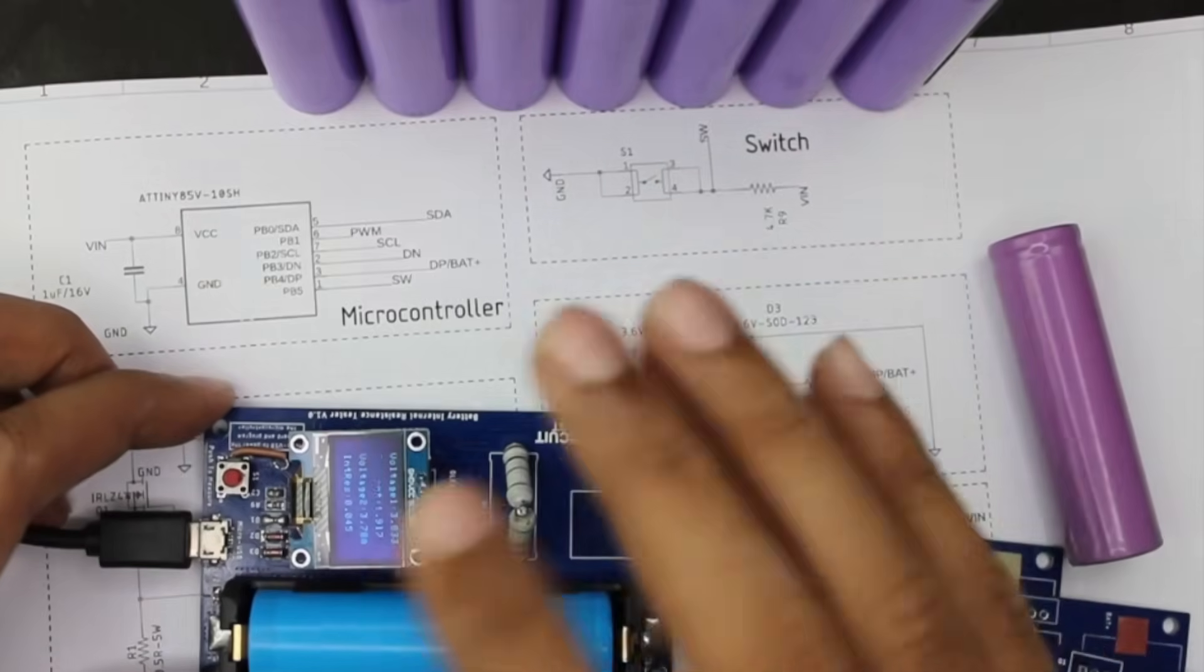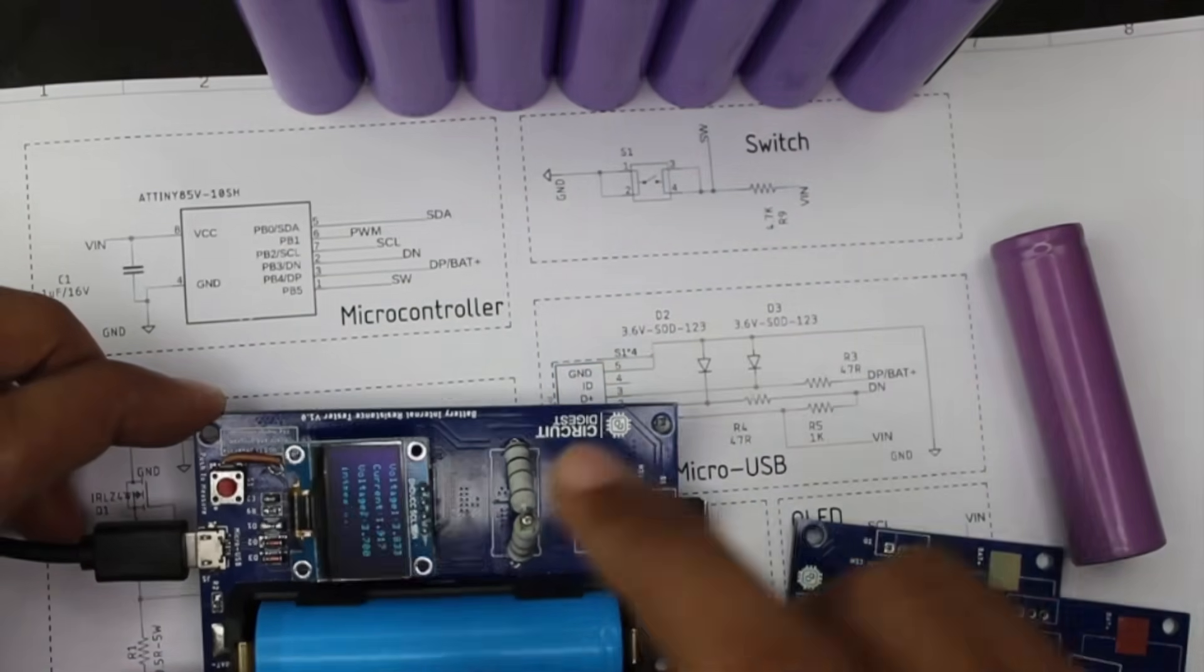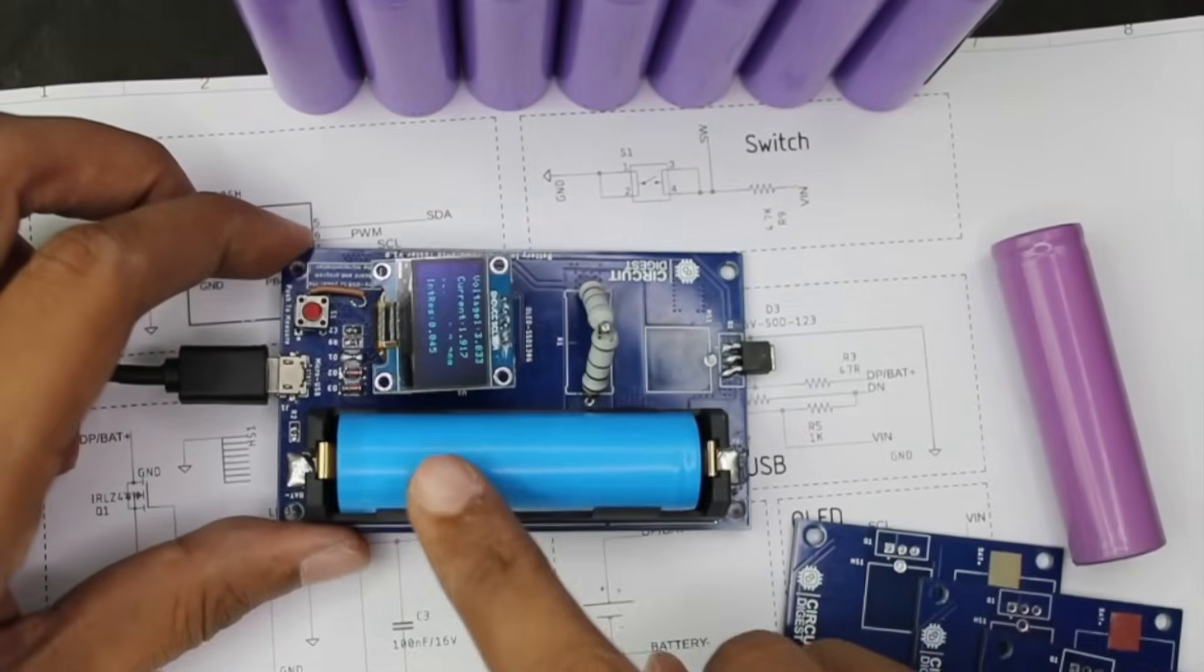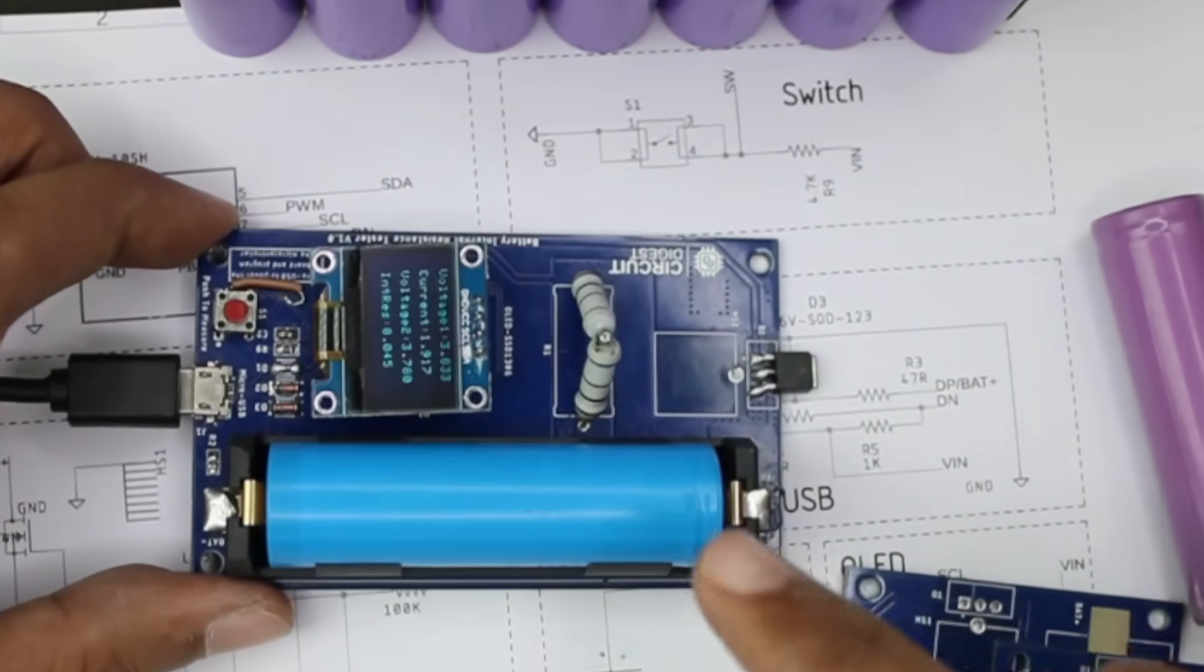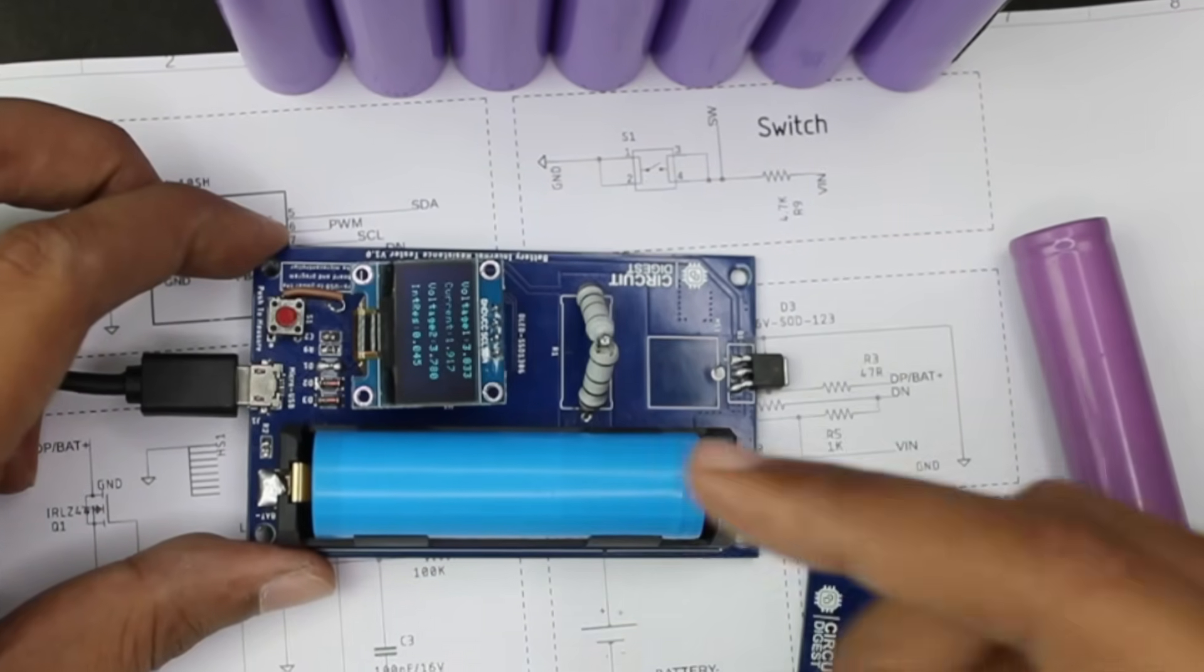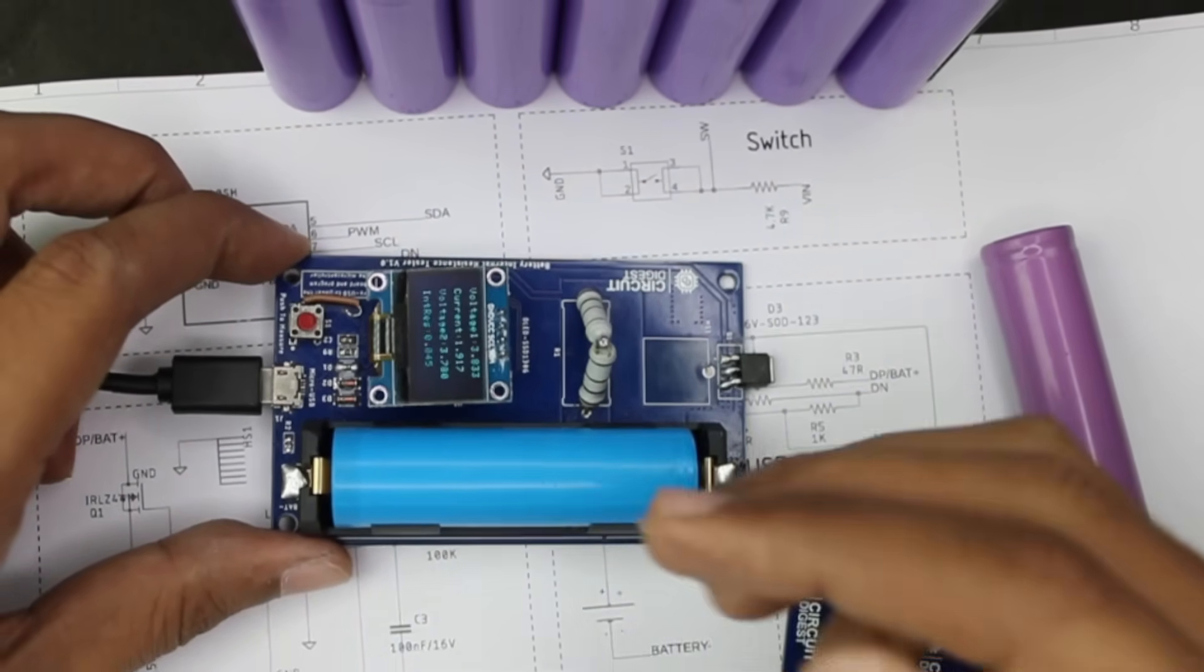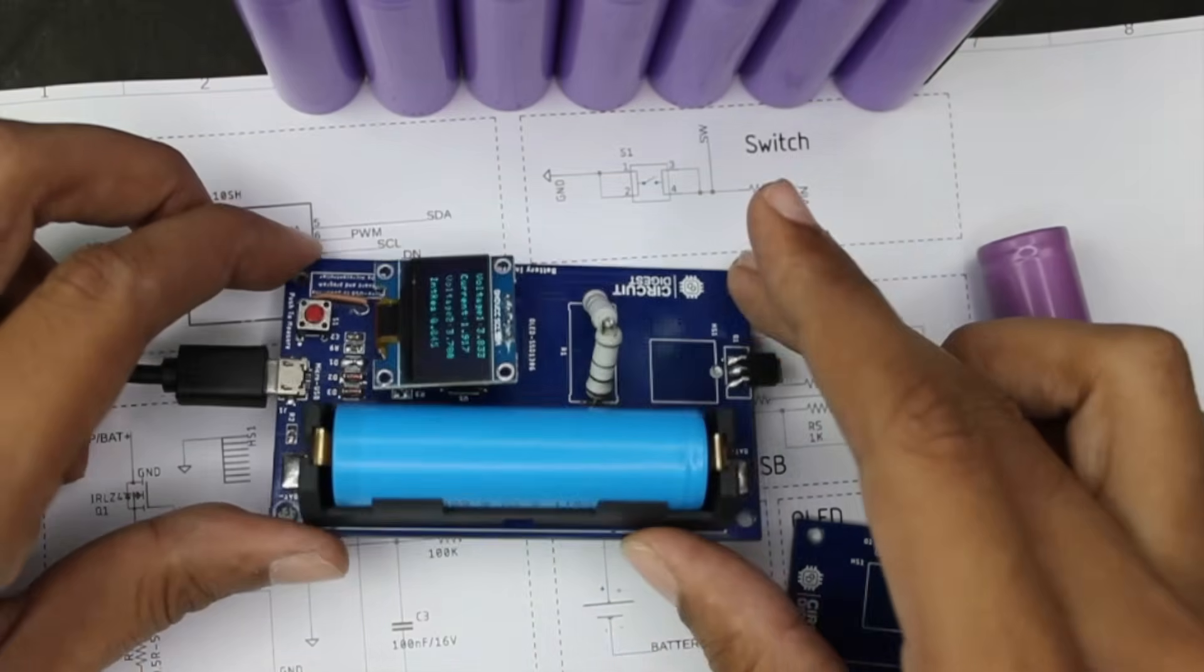Let me tell you how the board works. For calculating the IR resistance, we need to calculate three parameters in total: the open circuit voltage of the cell, then we connect the cell to this load resistor through the MOSFET and measure the load current and the voltage drop.